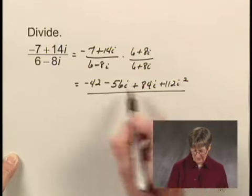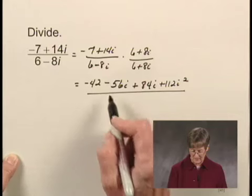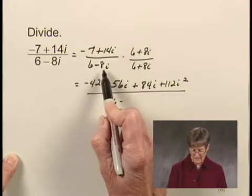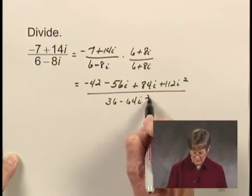And now in the denominator, I have the product of the sum and the difference of two terms, the same two terms. So I'll get 6 squared or 36 minus 8i squared, minus 64i squared.